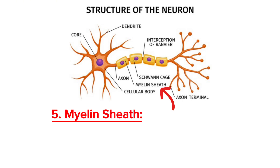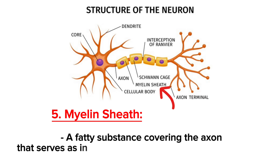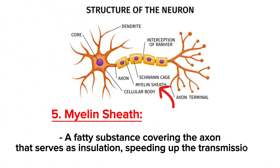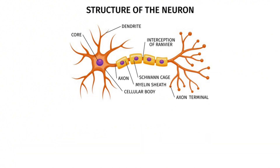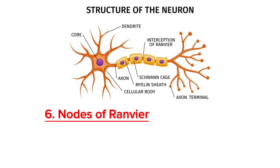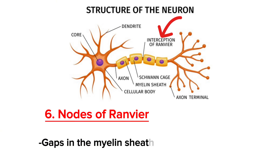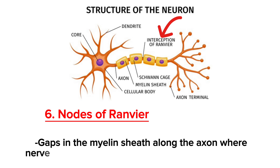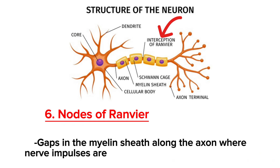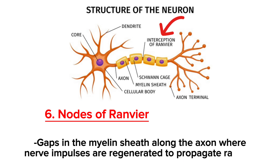Next is the myelin sheath — a fatty substance covering the axon that serves as insulation, speeding up the transmission of nerve impulses. We also have the nodes of Ranvier, which are gaps in the myelin sheath along the axon where nerve impulses are regenerated to propagate rapidly.